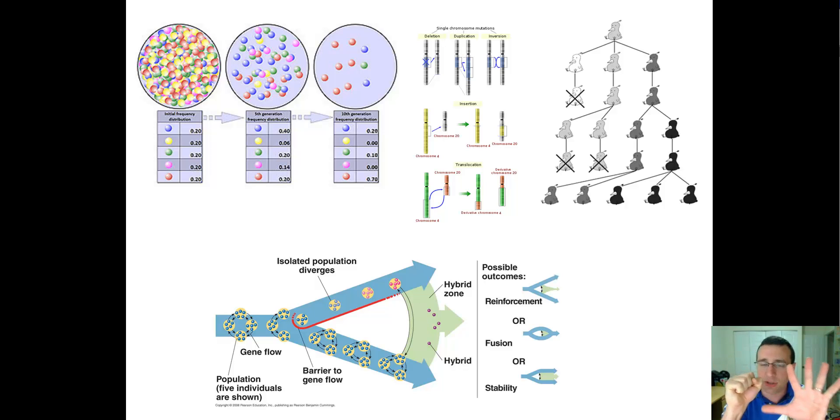Now, if there's enough changes accumulated over a very long period of time, these populations will be so different they will not be able to reproduce with each other anymore, and then you have two different species. So that's how it works. That's how microevolution becomes macroevolution.